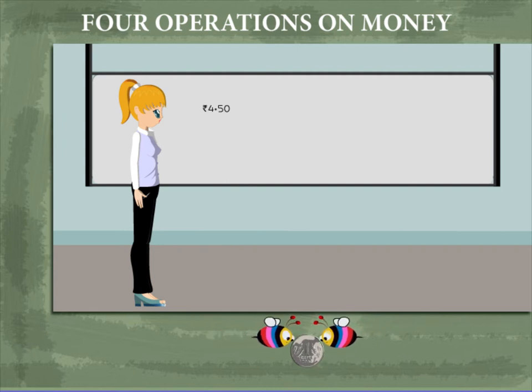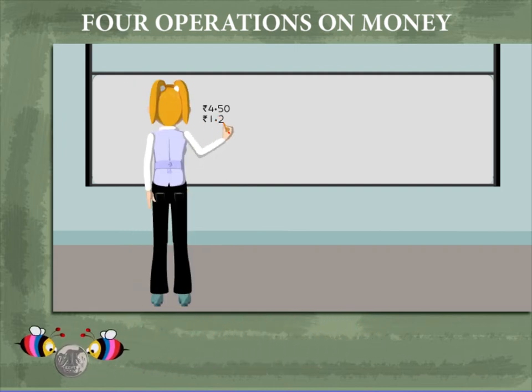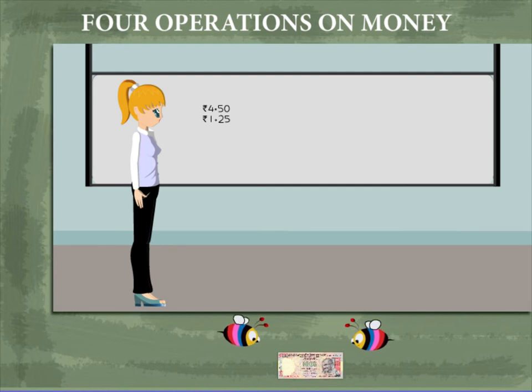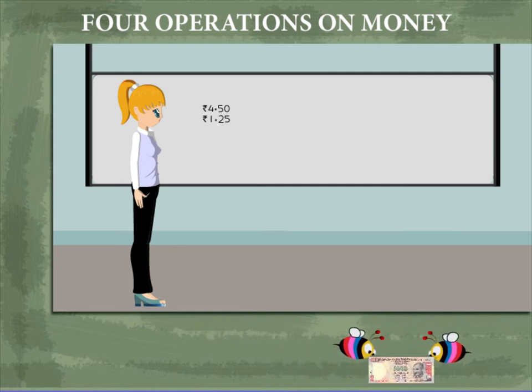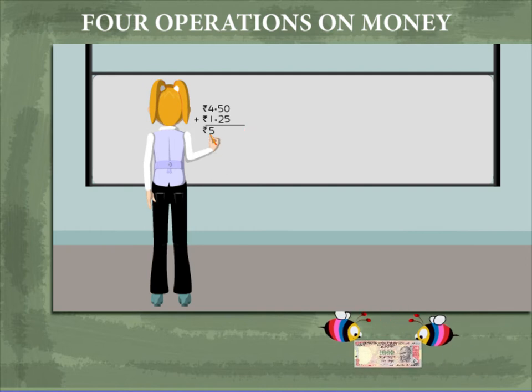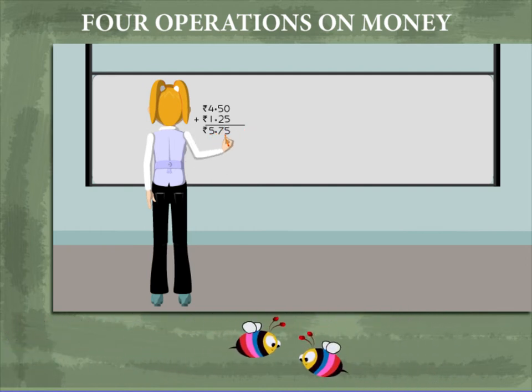Nancy ma'am now writes rupees 1 and 25 paisa and adds the two. She adds the rupees and writes 5. She adds the paisa and writes 75.